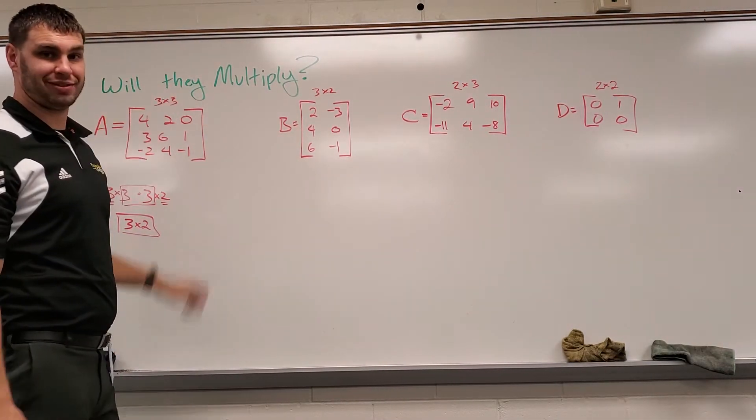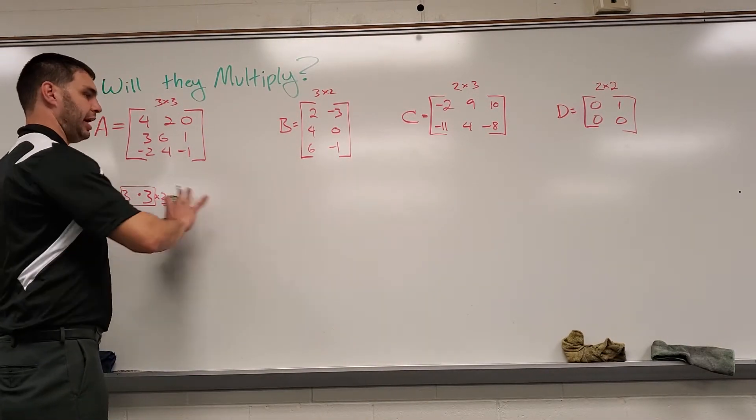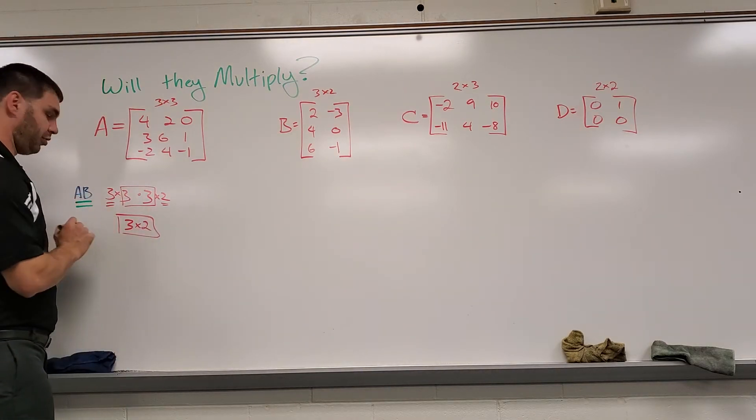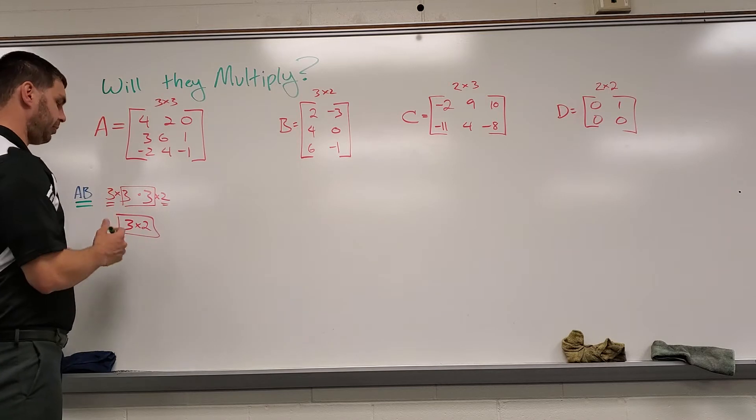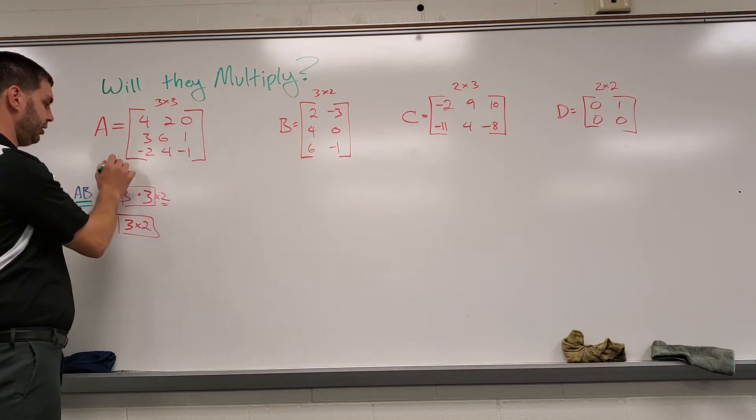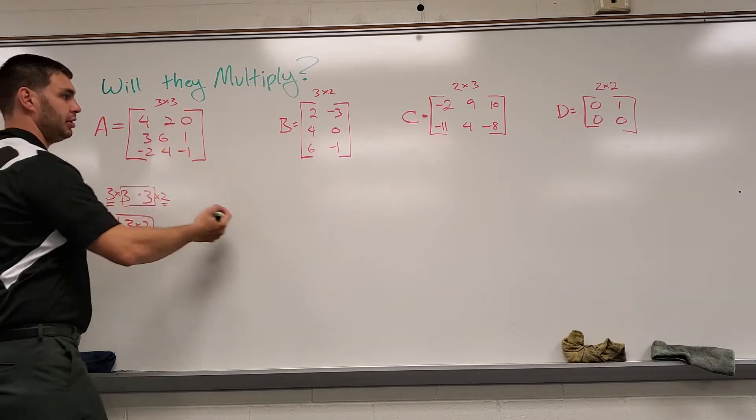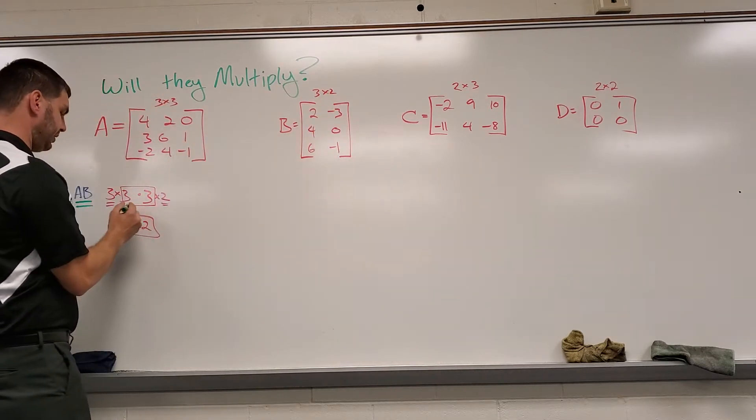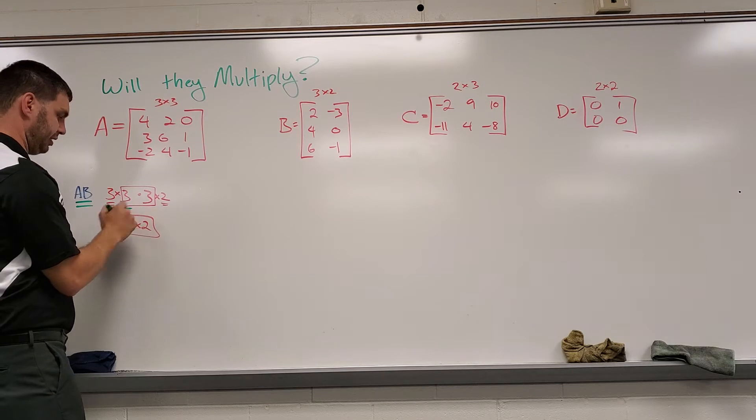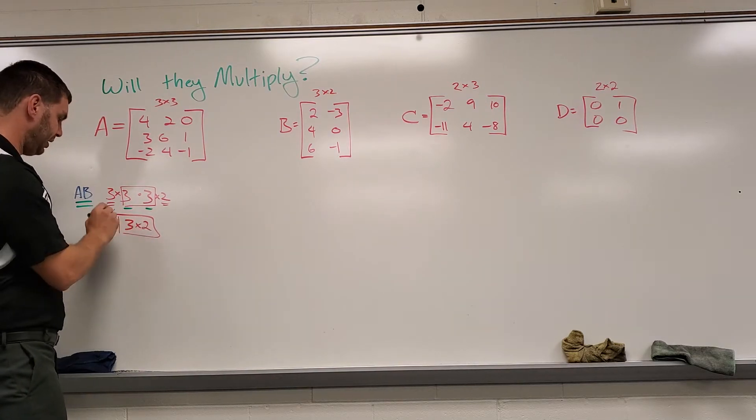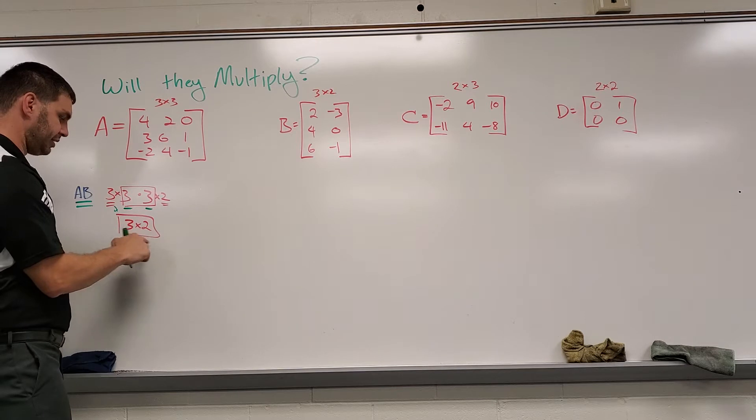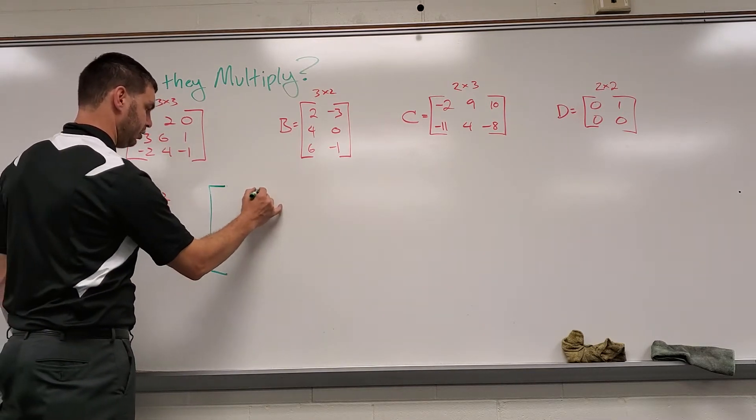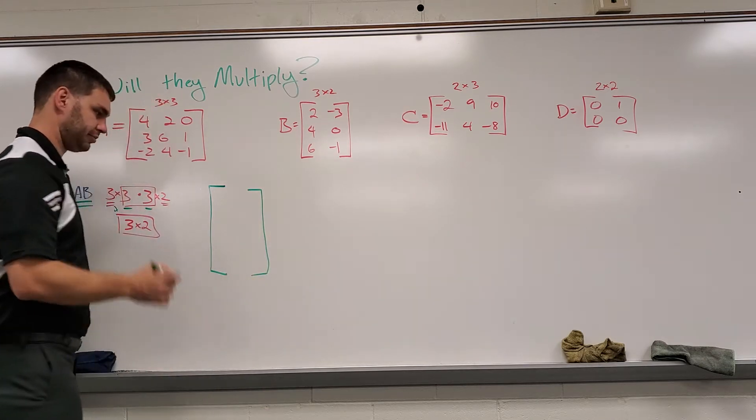Earlier we were asking ourselves the question, will these multiply? And I had a bunch of them listed out here, and we decided that one of them that we were looking at, it will work because we have three rows by three columns times three rows by two columns. So the threes in the middle, the columns in the first and the rows in the second matched up, and then that gave us a matrix which will be three rows by two columns.